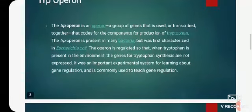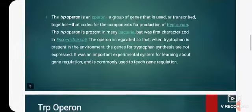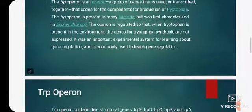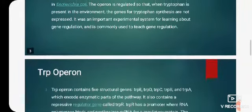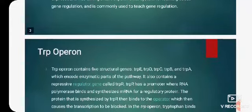The operon is regulated so that when tryptophan is present in the environment, the genes for tryptophan synthesis are not expressed. It was an important experimental system for learning about gene regulation and is commonly used to teach gene regulation.